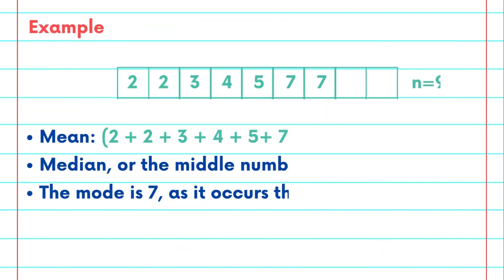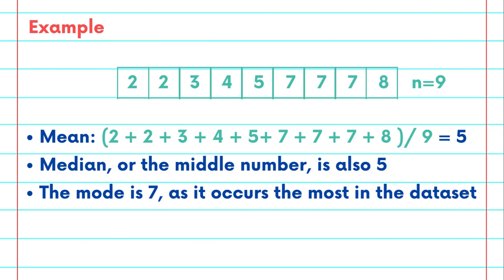Let's dive into an example. Let's consider the following data points arranged in ascending order. By adding up our data points and dividing by our sample size, we can calculate that the mean of this dataset is 5. The median, also known as the middle number when the data points are arranged in ascending order, happens to also be 5. And the mode is 7, because it occurs 3 times in the entire dataset.